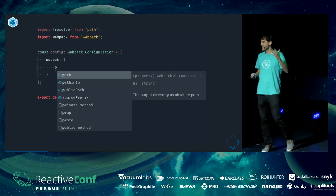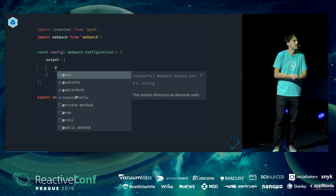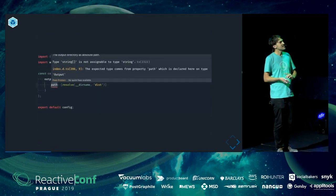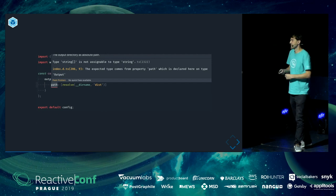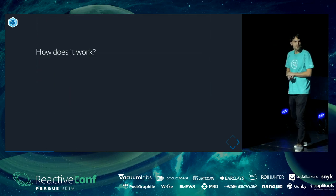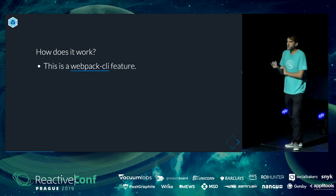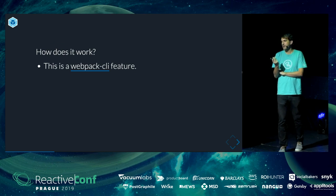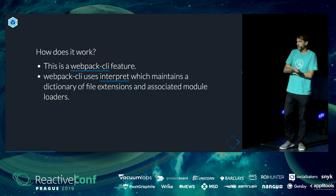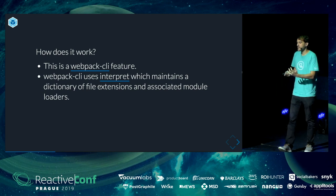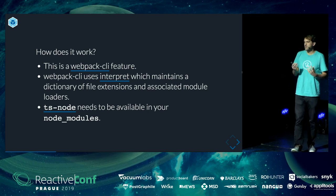The cool thing is that you get IntelliSense, so you don't need to guess the configurations anymore — your editor will show it to you. It will validate your config before you even run your build. For example, if output path is not an array but should be a string, TypeScript will tell you that. Just rely on the types. How does it work? It's actually a Webpack CLI feature, so it doesn't work if you use the Node Webpack API. Webpack CLI uses a module called Interpret, which maintains a dictionary of file extensions and associated module loaders — that's why it's searching for ts-node in your node_modules.